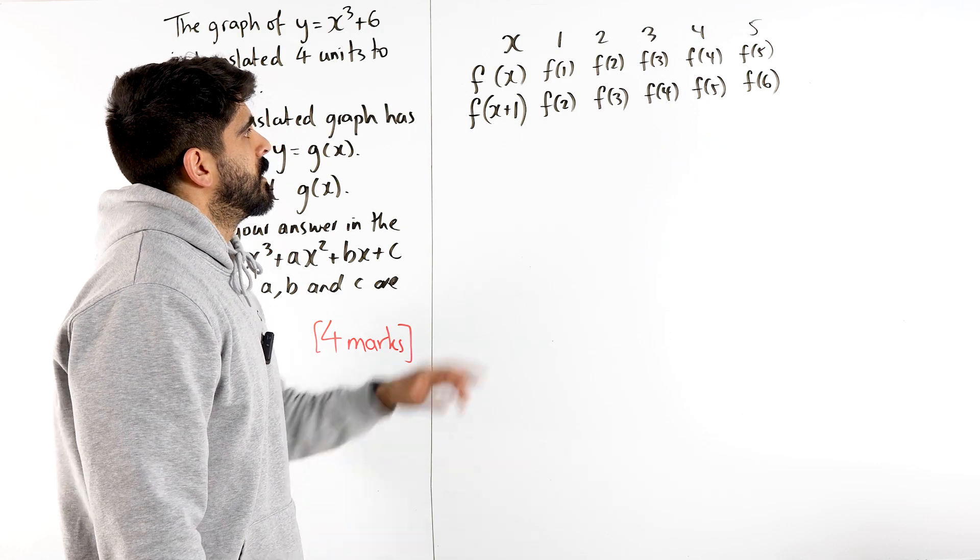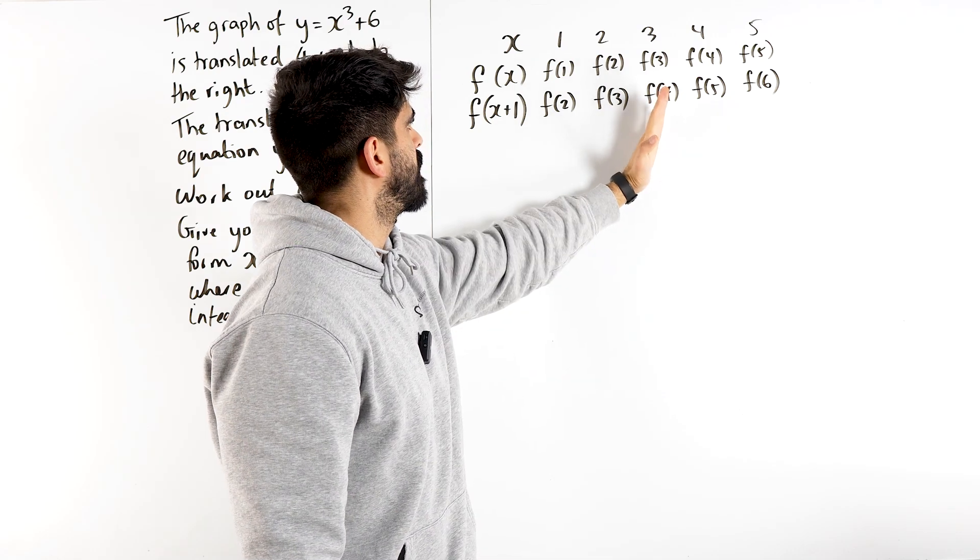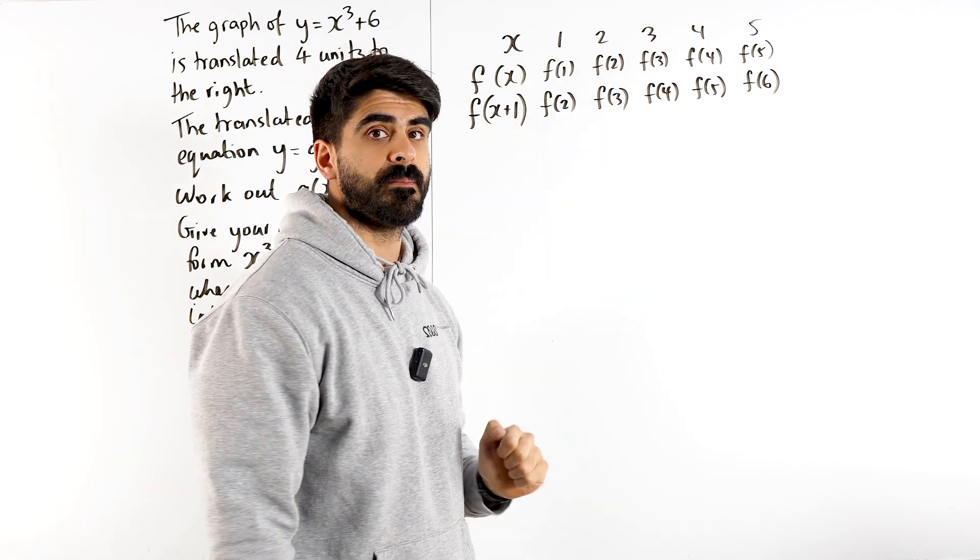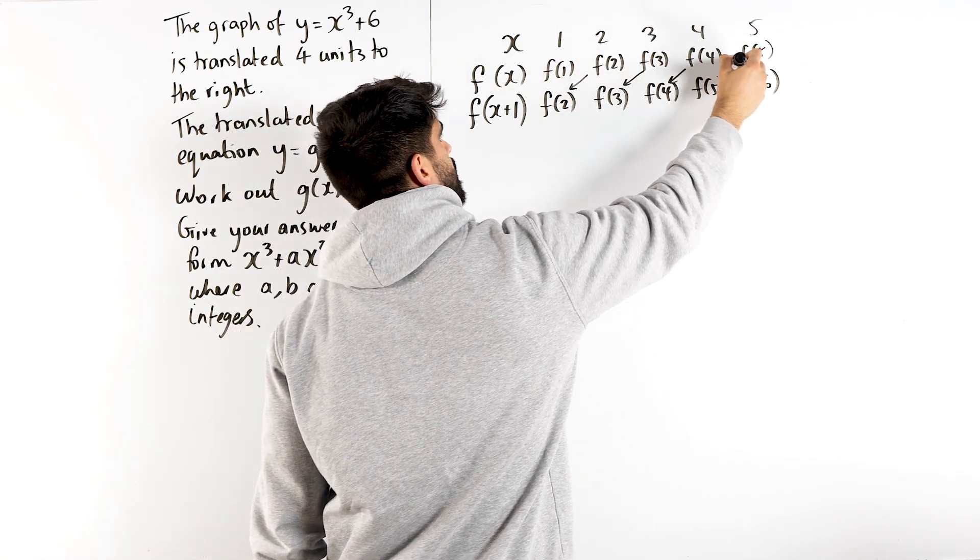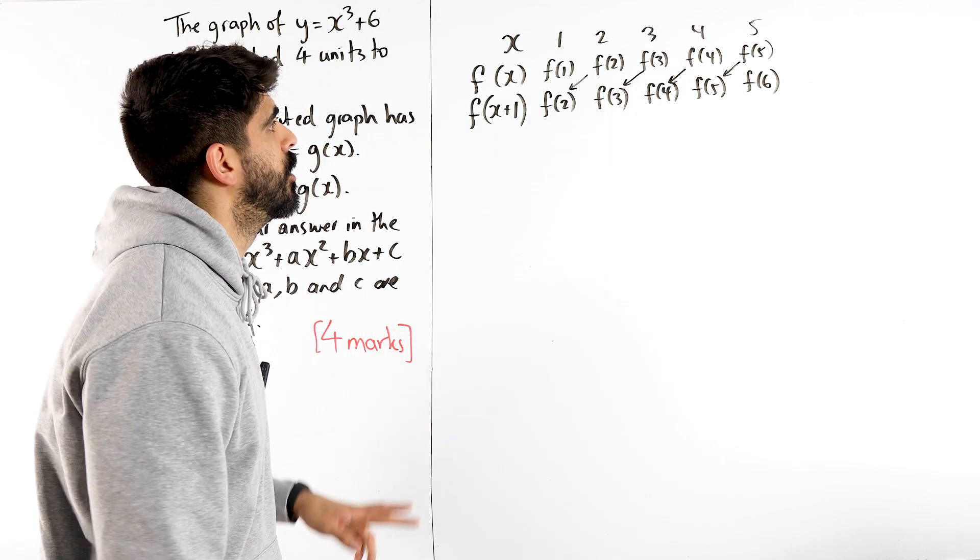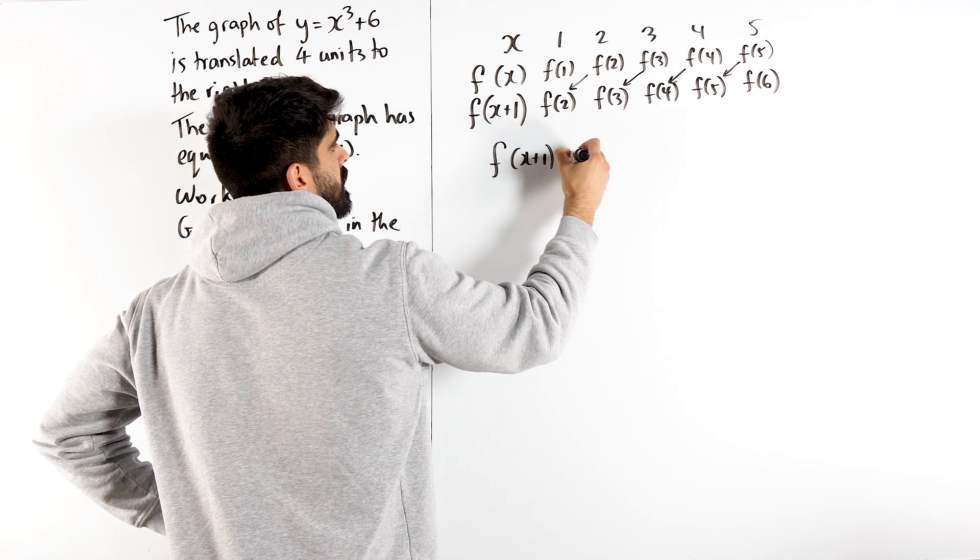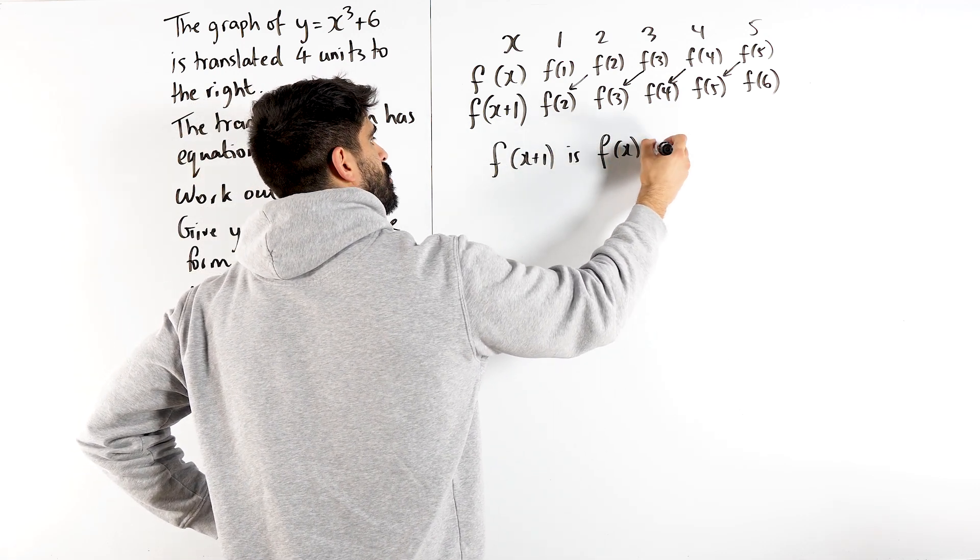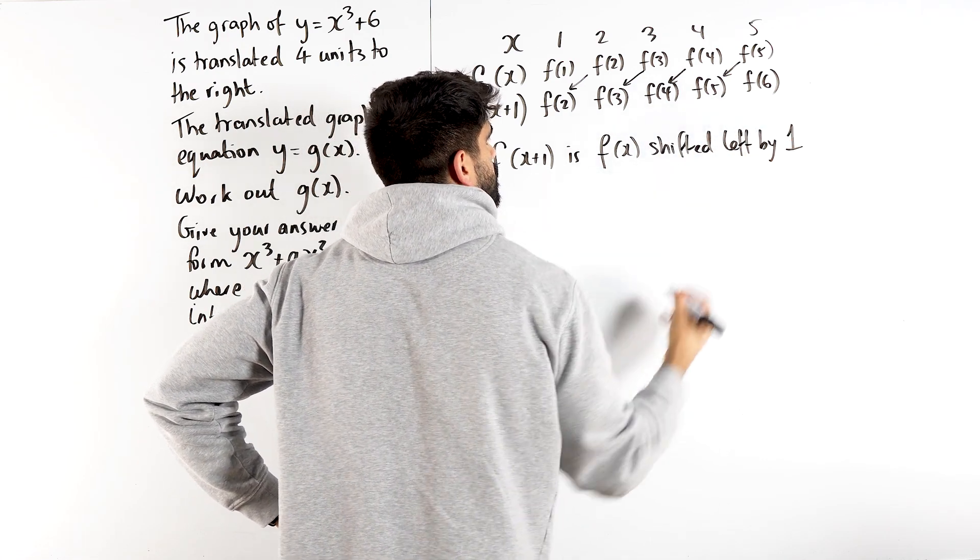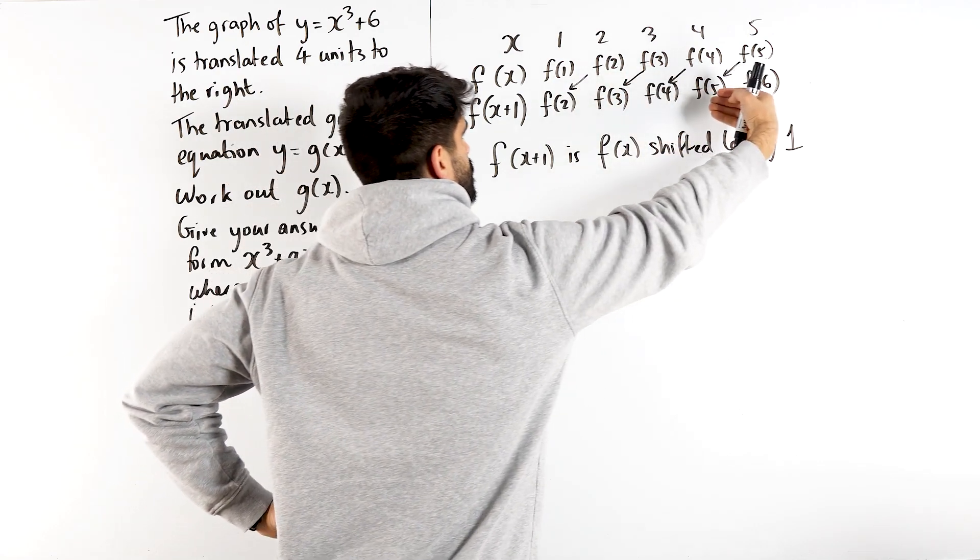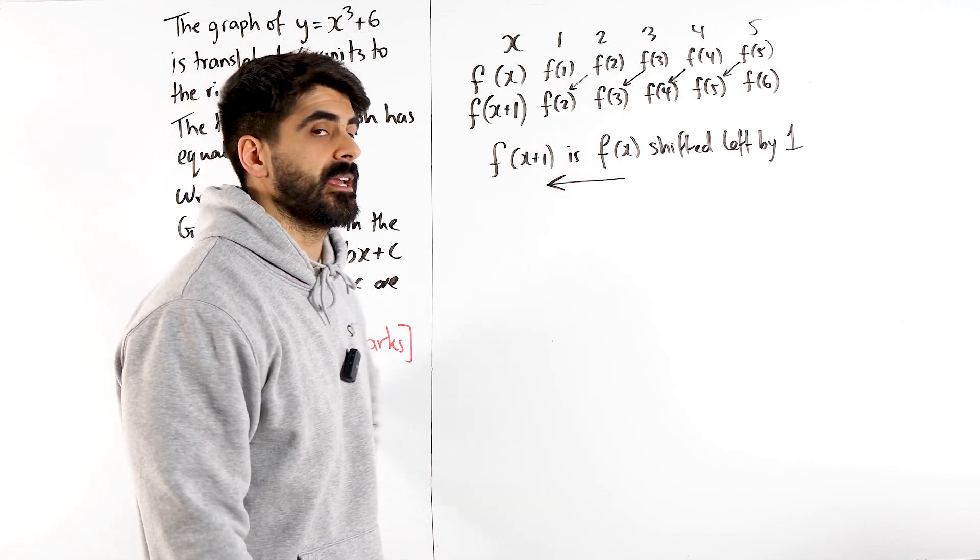These are actually the exact same as the ones above, but they have been moved to the left by 1. So you can see that we are moving to the left by 1. So what that means is this graph of f of x plus 1 is f of x shifted left by 1. You're literally taking this graph and you're moving it to the left by 1. It is a translation by 1.